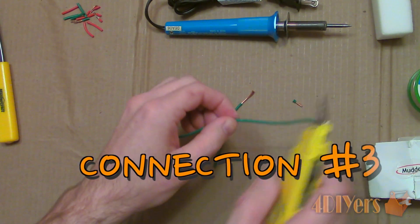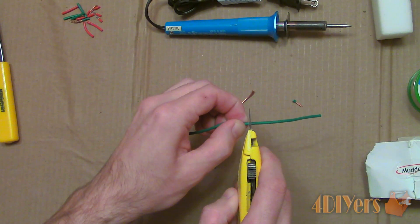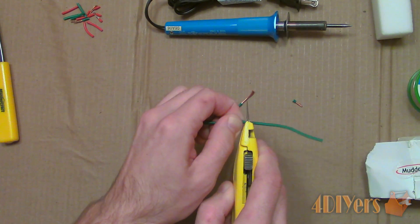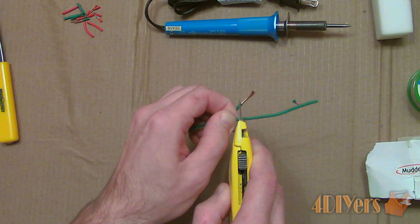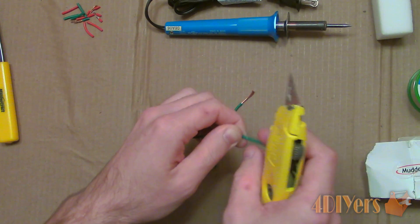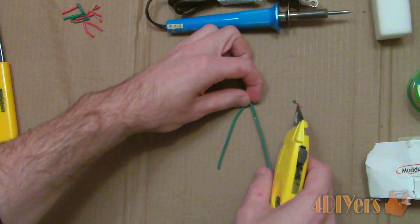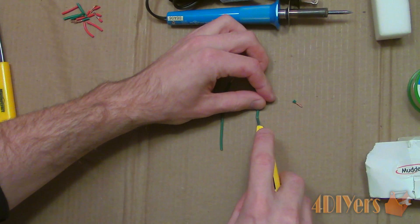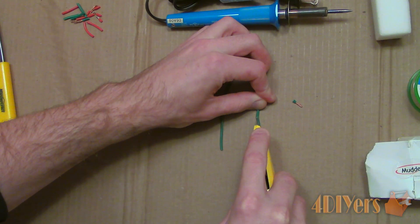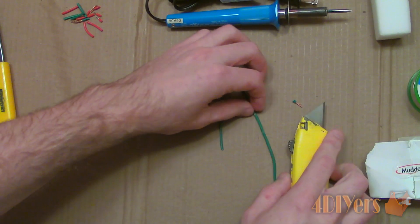Next is number three. A T or tap splice connection. This joint is intended to attach new wire to an existing length of wire without cutting into it. Strip the section of wire back that you want to intercept. Here I am using a knife, but be careful not to cut the existing strands of wire.